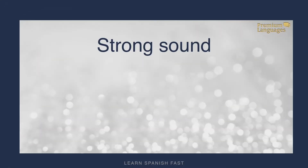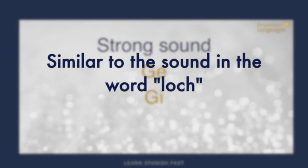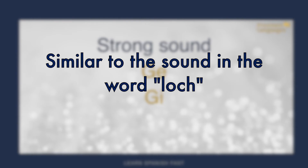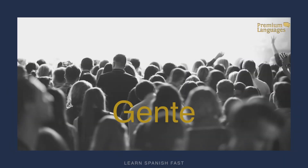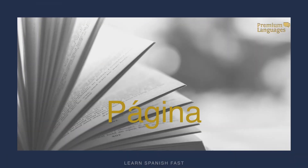The strong sound, on the contrary, is produced with the combination of G and E — it sounds GHE — and also with I. Notice the difference between the soft G and the strong GHE. Examples of the strong sound: GENTE (people) and PÁGINA (page).